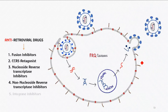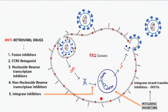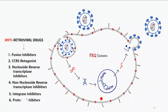The fifth category is integrase inhibitors. At this particular step, viral DNA enters our nucleus and integrates with our DNA. Certain drugs can halt or stop this process — they are called integrase strand transfer inhibitors. They won't let the viral DNA integrate with the host cell DNA. The most common drug in this category is raltegravir.